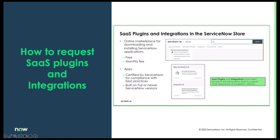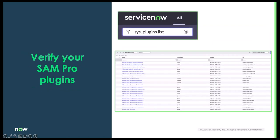Once you have the plugins installed, you might want to verify that they are. The best way to do this is to navigate to the navigation menu and type in sys_plugins.list — this will give you a list of all the plugins in your instance. You'll be able to filter that to make sure all your SAM Pro plugins that you need are installed.